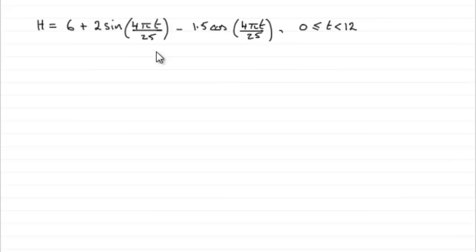Now, obviously this has got something to do with what we've been doing before, and where it is similar is this stretch here. We can see that this is 2 sine theta minus 1.5 cos theta, where clearly theta is the 4 pi t over 25. And we saw that this expression we could put in the form r sine theta minus alpha.